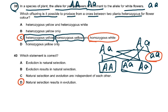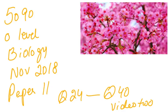Question 40, the last question: Which statement is correct? Natural selection results in evolution — so D is correct. Evolution is not natural selection, and they are not independent of each other. That completes this paper. This video covered questions 24 to 40. Please revise these — do the papers before you attempt to look at the video, then check the questions you got wrong. Thank you and best of luck for your exams.